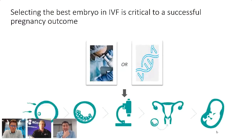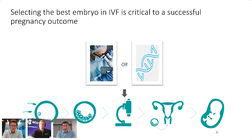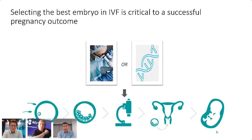In the IVF process, you start with the female egg, you fertilize it with sperm, and after around five days they become embryos. You can have say five in a dish at that stage, and a clinician or embryologist needs to decide which embryo to transfer to the patient to see if she gets pregnant.